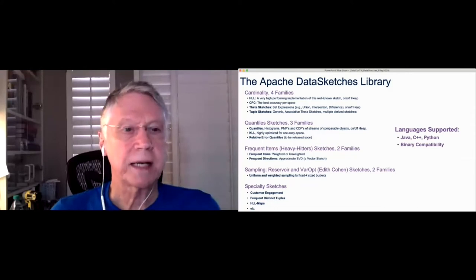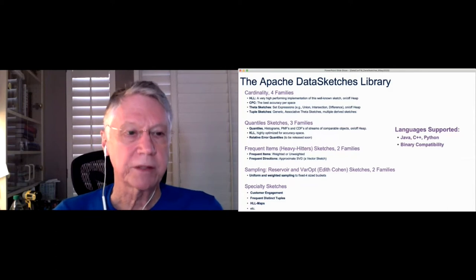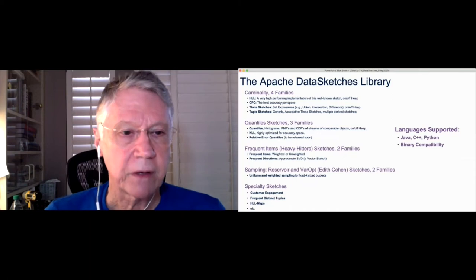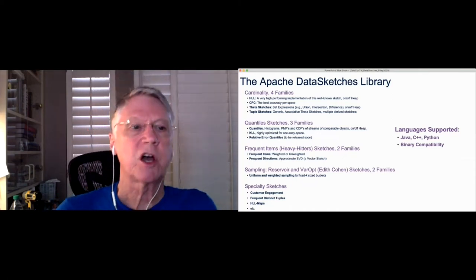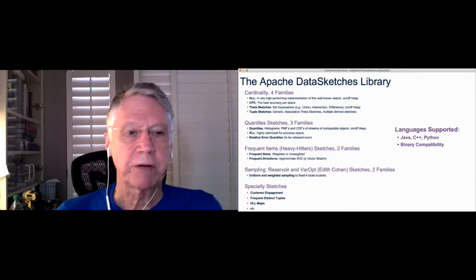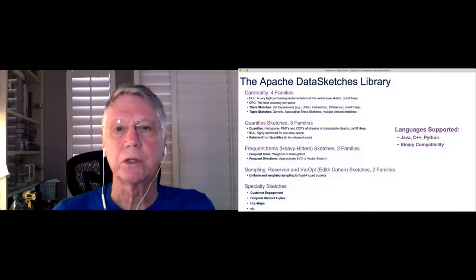Then we have our quantile sketches. So we have three families, traditional quantiles and a leading, probably the best-performing sketch in terms of quantile analysis is KLL. And we have a new sketch, which I'm talking about in a minute. It's a relative error quantile sketch to be released soon. We have frequent items, heavy hitter sketches that are also very popular. And the frequent direction sketch, which is very useful in artificial intelligence and machine learning.